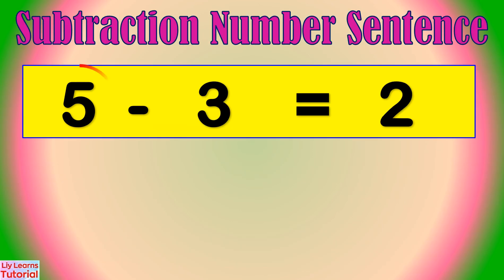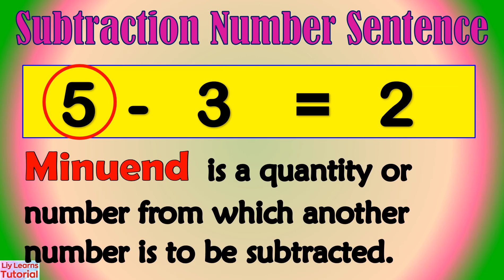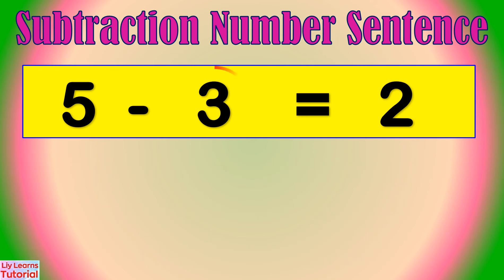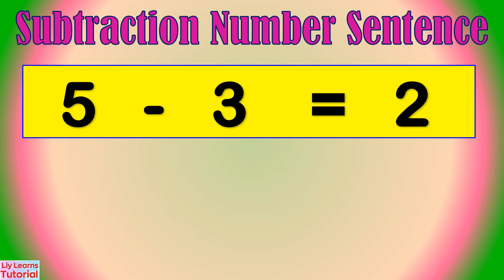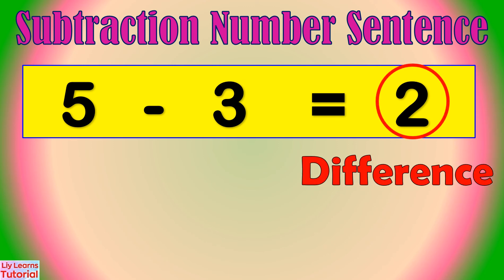This is the minuend. Minuend is a quantity or number from which another number is to be subtracted. Subtrahend is the quantity or number to be subtracted or taken away from another. The answer in subtraction is called difference.